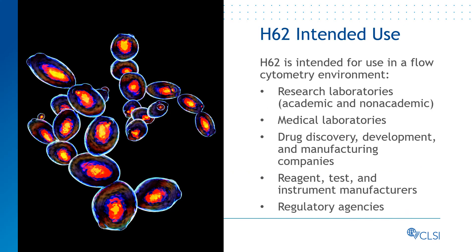The H-62 guideline is intended for use in a flow cytometry environment in which pre-clinical or non-clinical and clinical assessments are conducted, including but not limited to research laboratories — academic and non-academic — medical laboratories, drug discovery, development, and manufacturing companies, reagent, test, and instrument manufacturers, and regulatory agencies.